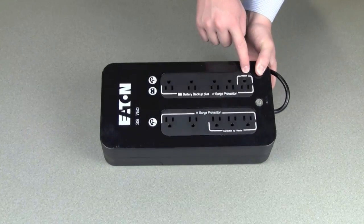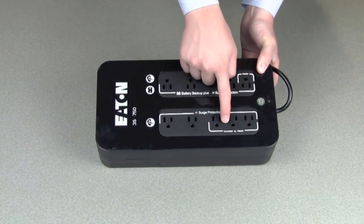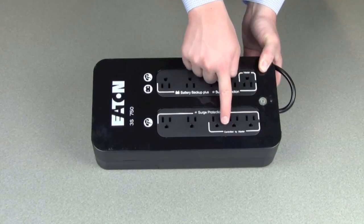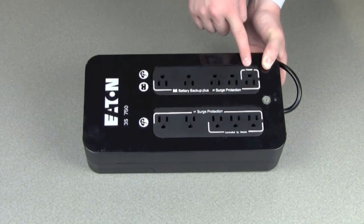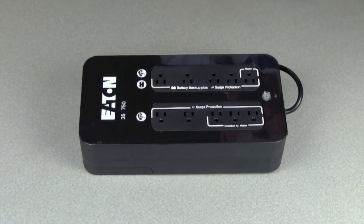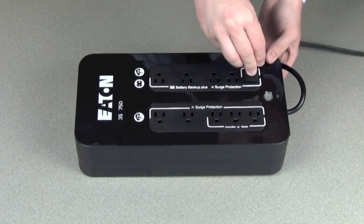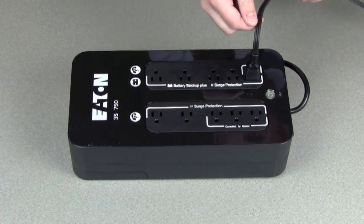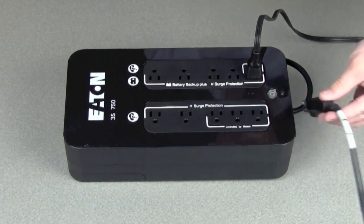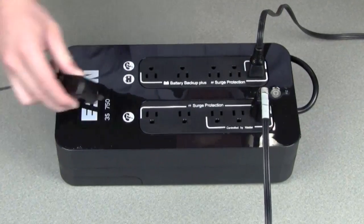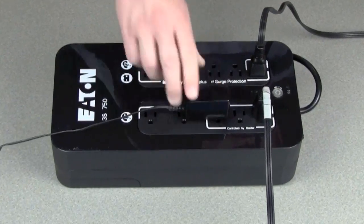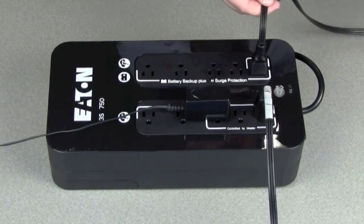Now I want to talk about the master control and the three controlled by master outlets featured here. One, two, three. This is meant for plugging in something like a computer into the master outlet and then plugging peripheral devices, let's say a printer, PC speakers, into the controlled by master devices. When the master device is turned off, the power will be cut to those outlets, reducing any phantom power losses.